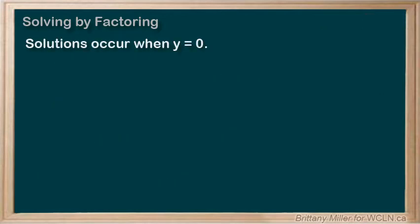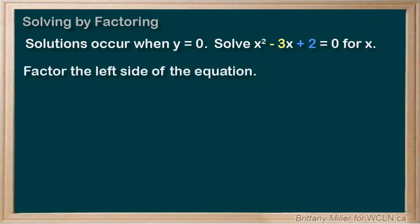X intercepts are values where y equals 0, so we essentially want to solve x squared minus 3x plus 2 equals 0 for x. Because we have an x squared and an x term, it's difficult to do algebra to isolate x. Instead, we want to factor the left side of the equation.